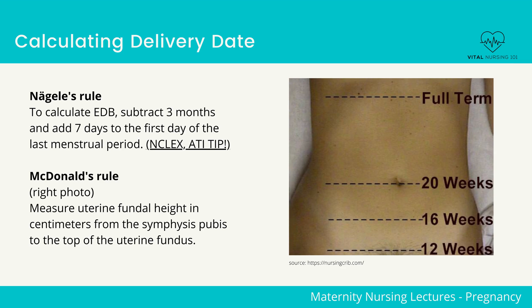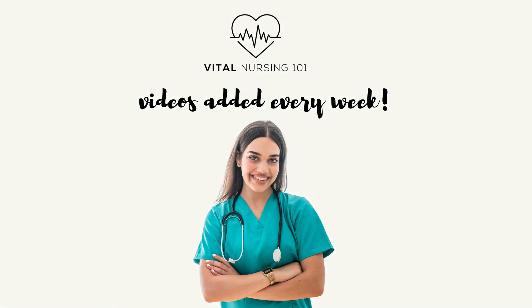McDonald's rule. This is when the uterine fundal height is measured in centimeters from the symphysis pubis to the top of the uterine fundus. Between 18 and 32 weeks of gestation, the fundal height measurement should approximate gestational age. In the next video, we will cover antepartum fetal assessment.